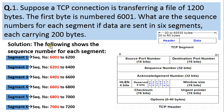Now let us come to the example. We have to write down the 6 segments separately and mention the sequence numbers carried in each. Segment 1 will carry sequence numbers 6001 to 6200, because the first byte number is given as 6001 and each segment carries 200 bytes. Since segment 1 ends at 6200, the next segment begins at 6201 and ends at 6400.